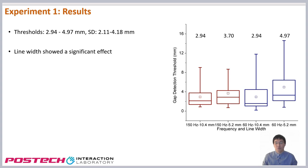The line width was the only significant factor. There was no difference between the results of sighted and visually impaired participants.